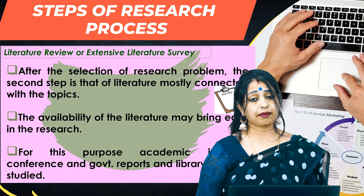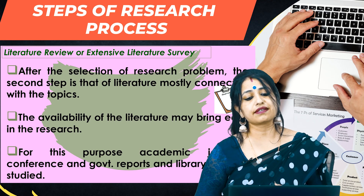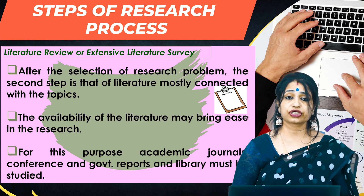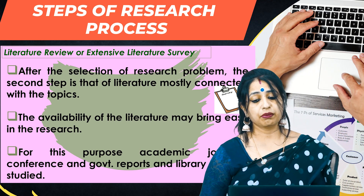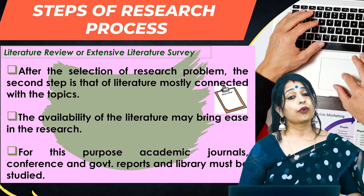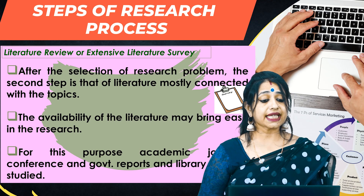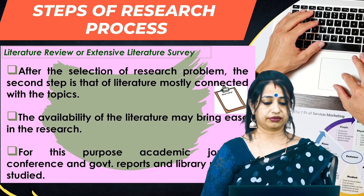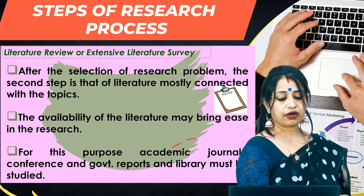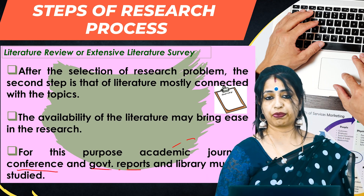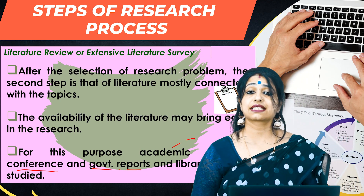The next step in the process is the literature review, or extensive literature survey. After the selection of a research problem, the second step is reviewing literature mostly connected with the topic. The availability of literature may bring ease to the research process. For this purpose, you can use academic journals, conferences, government reports, libraries, and even newspapers, which must be studied thoroughly.